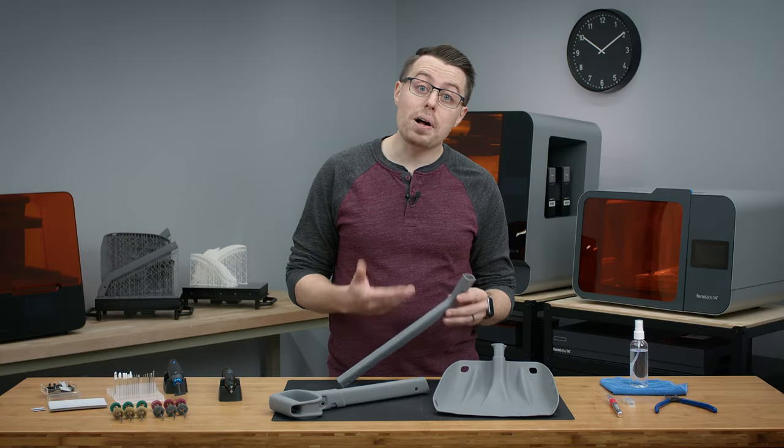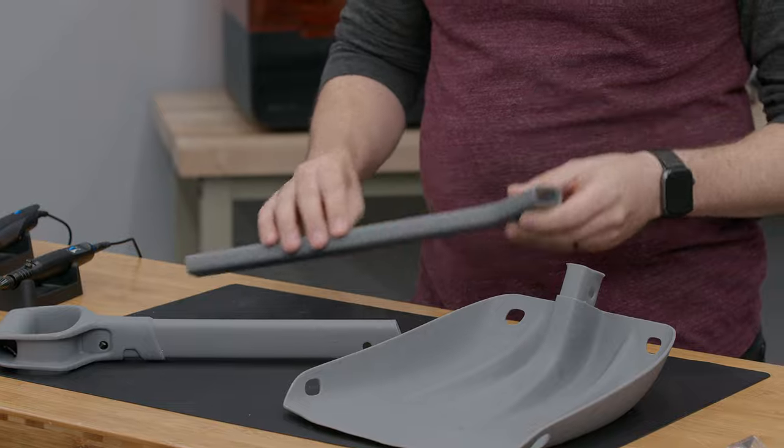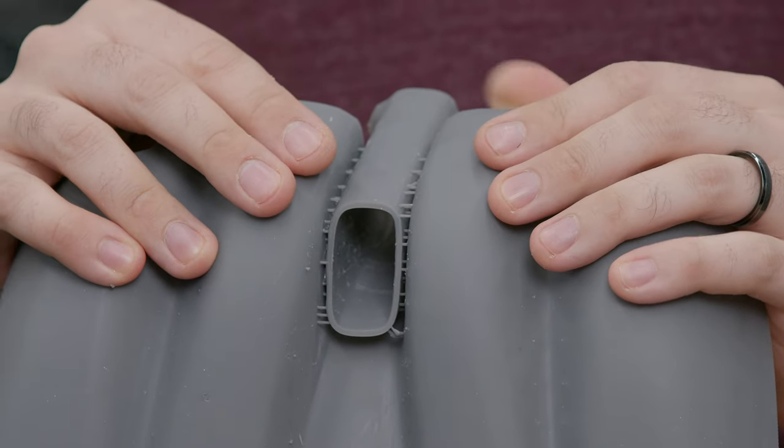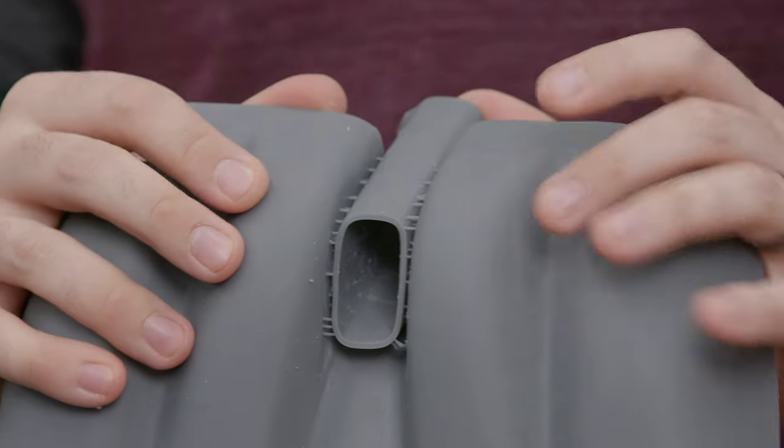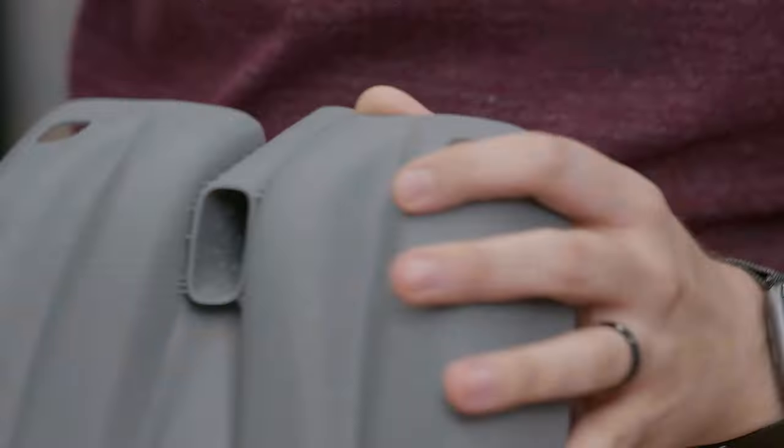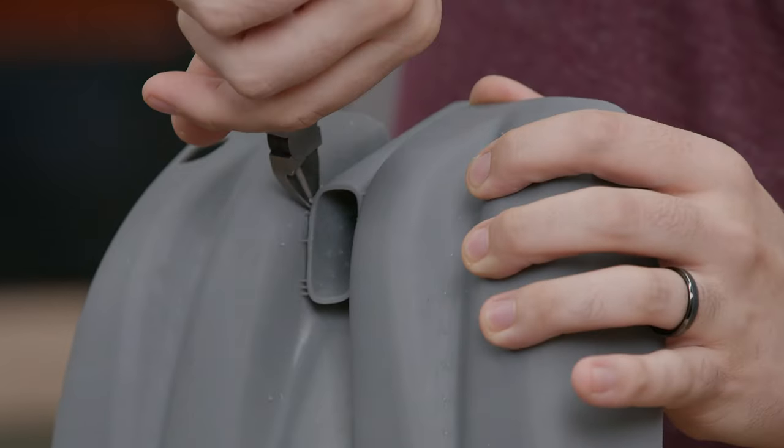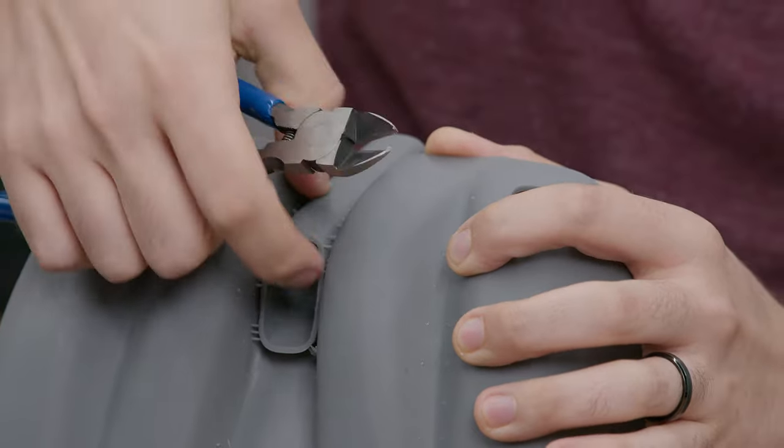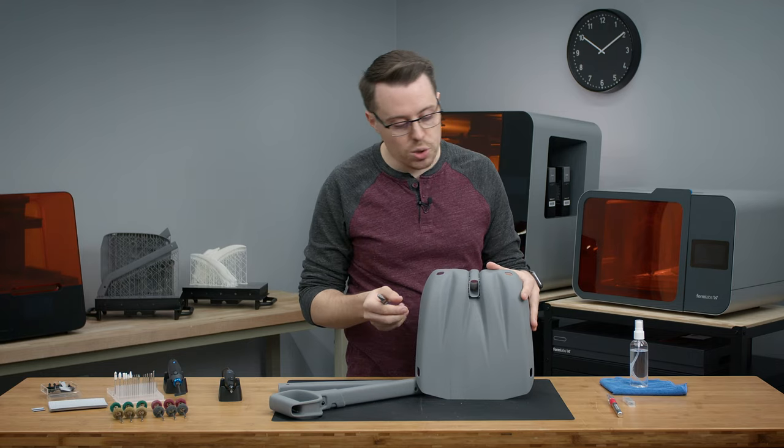Now that we've removed the bulk of the supports, we still have some support knobs to contend with, as well as some harder-to-reach supports. So typically, for these harder-to-reach areas, we'd recommend using either our flush cutters or the hobby knife. The flush cutters are a little bit bigger, and you can access them pretty well in this area. However, I think the hobby knife might be a better tool for the job.